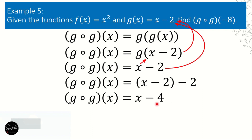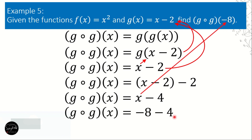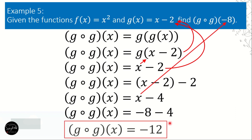That completes the first part of the solution, which was introduced in part 1 of our video lesson. Now we remove x and replace it with negative 8, giving negative 8 minus 4. Subtracting integers, negative 8 minus 4 equals negative 12. So g composite g of negative 8 is equal to negative 12.